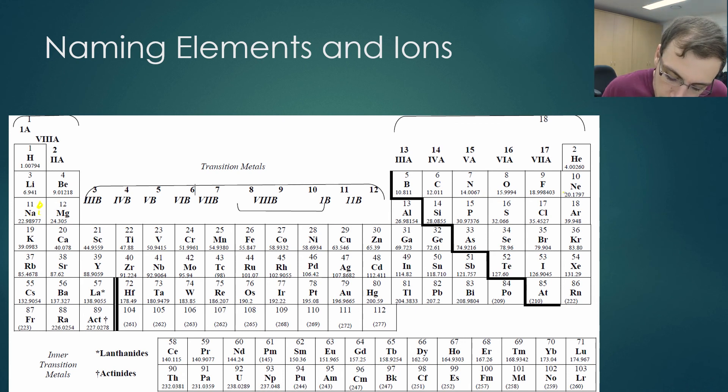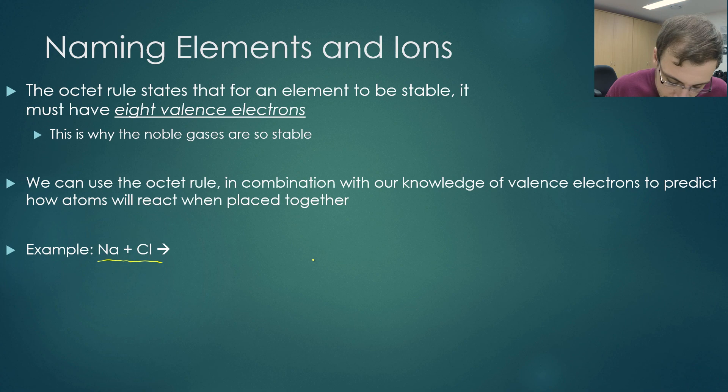Let's have a look at chloride, which is over here. How many valence electrons does that have? It has seven. Sodium, Na, it has one electron, which I'm just going to draw as a little dot here. And we've got chloride, which has seven.